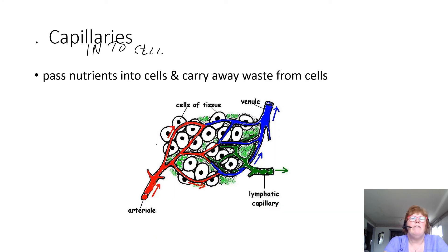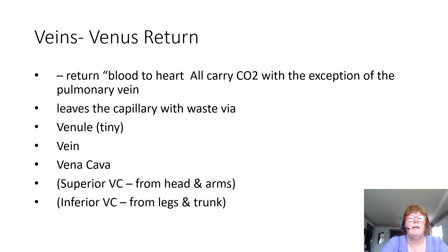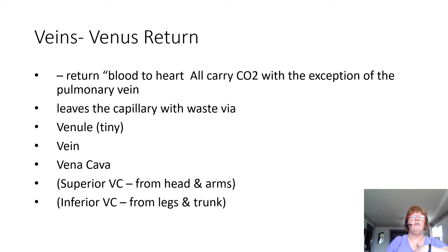Capillaries go into the cell and pass nutrients in and carry waste away from the cell. Veins are another type — that's where venous return happens, and they return blood to the heart. All veins carry carbon dioxide, with the exception of the pulmonary vein, which goes from the lungs to the heart and carries oxygenated blood. The smallest ones are called venules, then the veins, and then the vena cava, which enter into the heart.